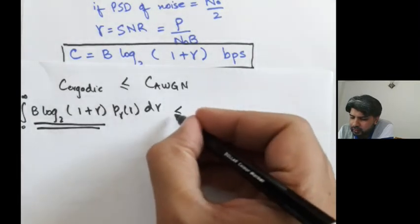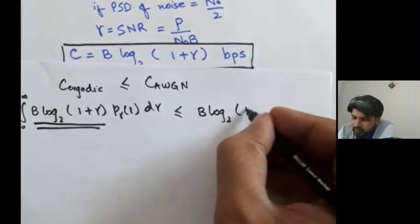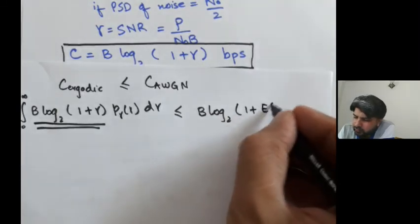This would be less than equals to B log base 2 of 1 plus the expected value of gamma.